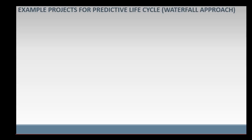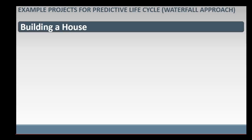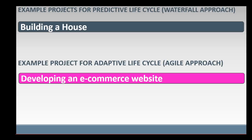This video clearly explains the differences between Predictive Lifecycle, also called Waterfall Approach, and Adaptive Lifecycle, also called Agile Approach, using the following real-life projects. For Predictive Project Lifecycle or Waterfall Approach, building a house. For Adaptive Project Lifecycle or Agile Approach, developing an e-commerce website. So this video is also titled Waterfall Approach versus Agile Approach.